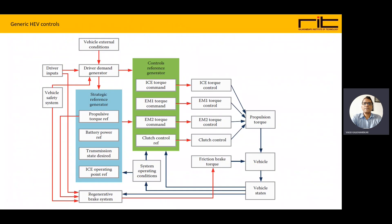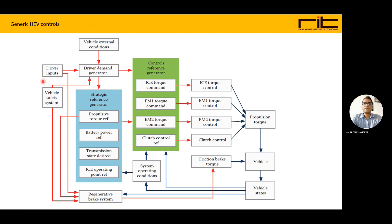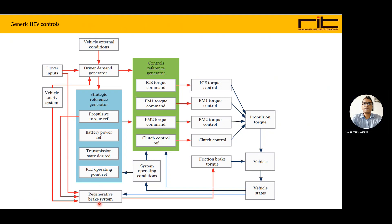The figure shows a generic hybrid electric vehicle control. Here we can see the main blocks discussed: the driver's input, the strategic reference generator, the control reference generator, and the regenerative brake system. The driver command generator gets input from the driver input, vehicle safety systems input, vehicle external conditions, and it gives input to the strategy reference generator.